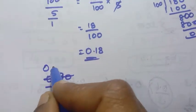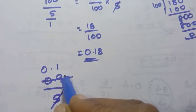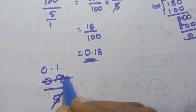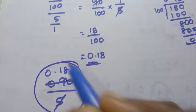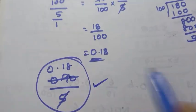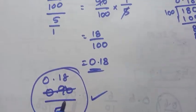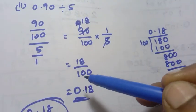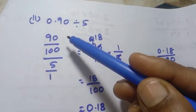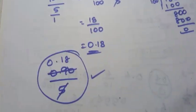You can check straight away by direct division: 5 into 0 is 0, 5 ones are 5, remainder 4, 5 eights are 40, giving 0.18. This is the straight method. Step by step, we can solve it as shown.